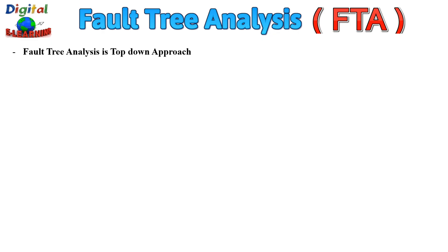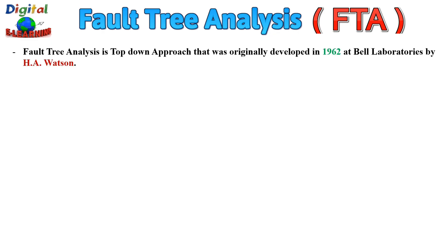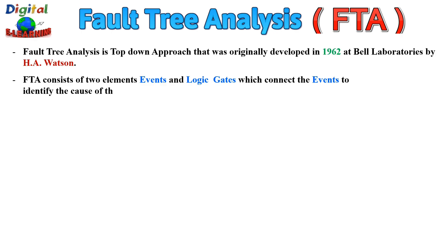FTA, or fault tree analysis, is a top-down approach that was originally developed in 1962 at the Bell Laboratories by H.A. Watson. FTA consists of two elements: events and logic gates, which connect the events to identify the cause of a top undesired event, which is the last event to occur. The fault tree analysis does not make any assumptions — it brings together all the perspectives that could cause the event of concern.